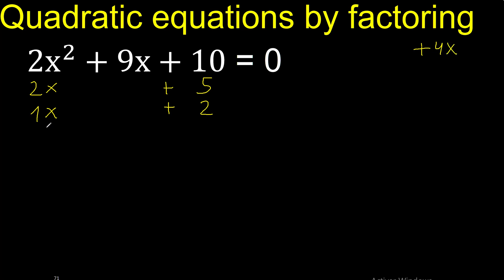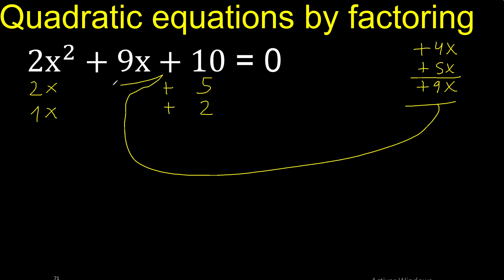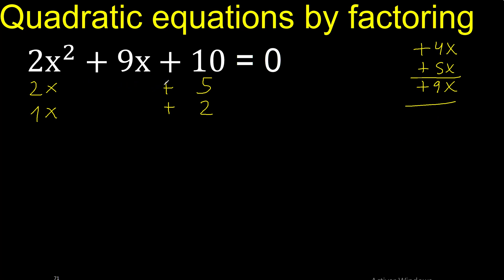Now, 1 multiplied by plus 5 is plus 5. Therefore it is correct.